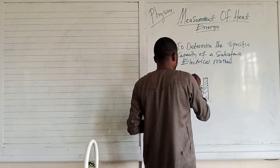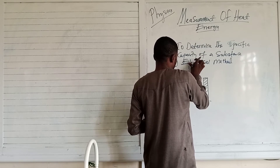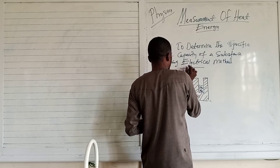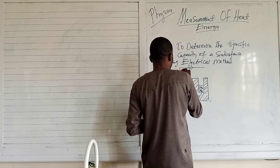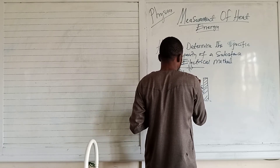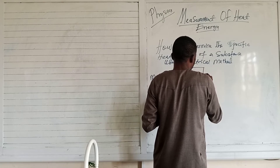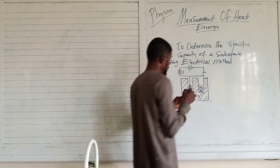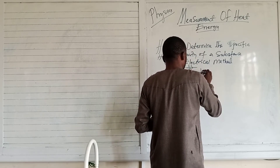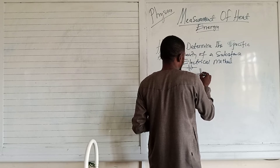The heating coil is connected to a power source. Let's draw a simple circuit diagram. We have an ammeter to measure the electric current. The heating coil is connected in the circuit, along with a switch, and the time taken for the current to flow is also recorded. The thermometer is inserted here to record the highest temperature.